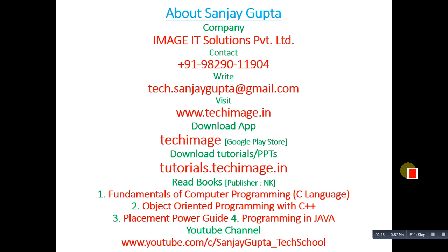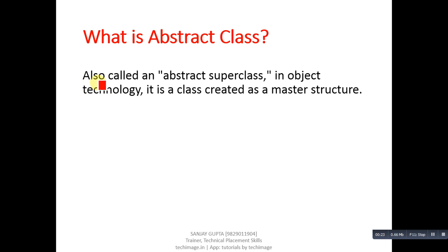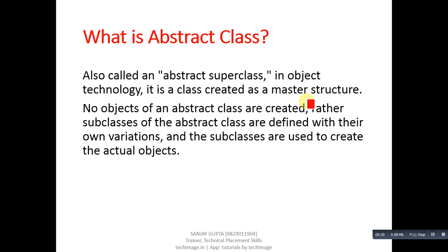First question: what is abstract class? Answer: it is also called an abstract super class. In object technology, it is a class created as a master structure. No objects of an abstract class are created; rather, subclasses of the abstract class are defined with their own variations.